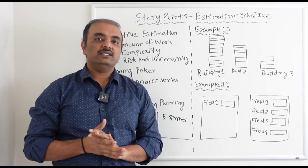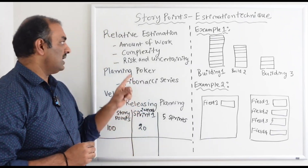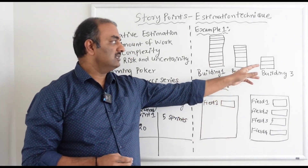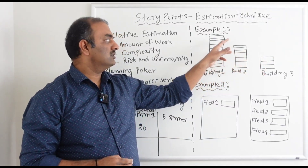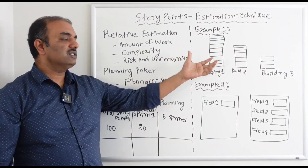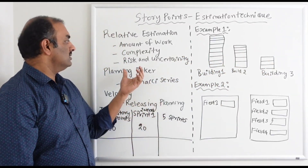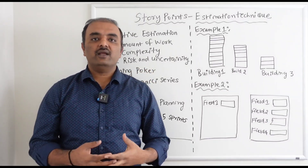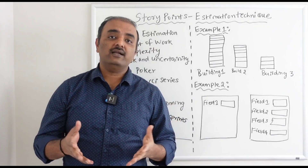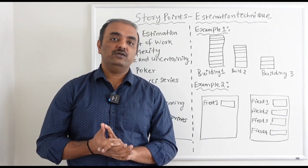So in story points, every time you estimate, you use three attributes. First is the amount of work — in our example, three floors, six floors, and nine floors. Second is complexity — how complex it is to complete the building. Third is risk and uncertainty — there may be a requirement to build a specific room that engineers don't know how to do, or may need special expertise.